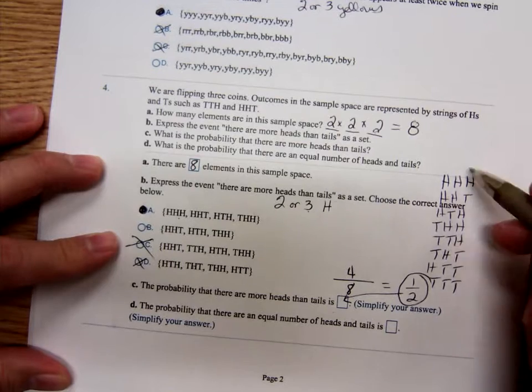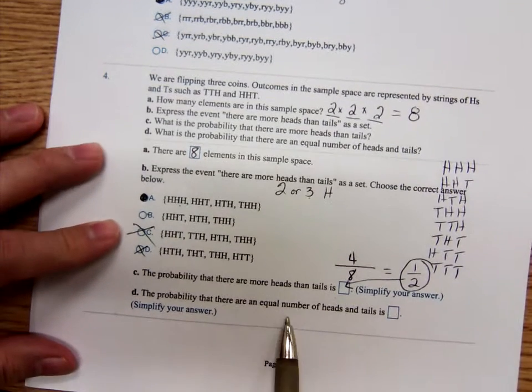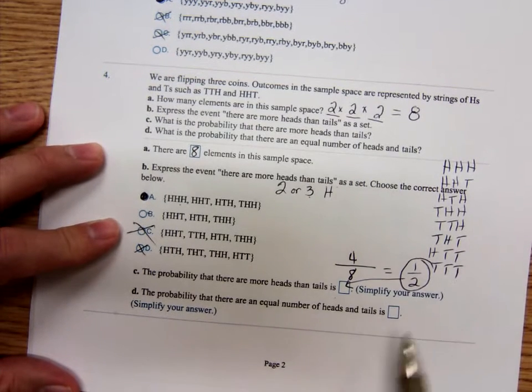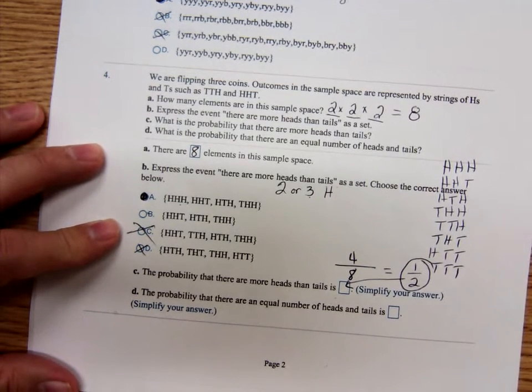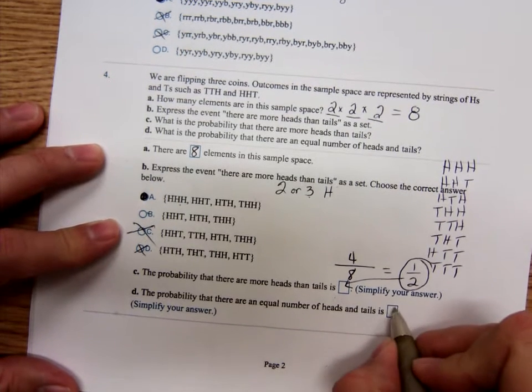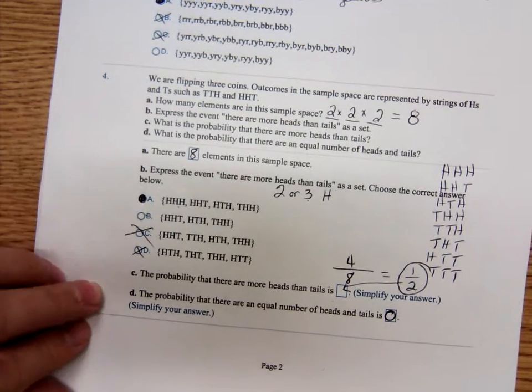Because there's three, just three outcomes, it wouldn't be possible to have the same number of heads or tails. If we were doing it four times, then yes, you could have two heads, two tails. But because there's only three, there's no way you're going to get an equal number of heads and tails. So, zero there.